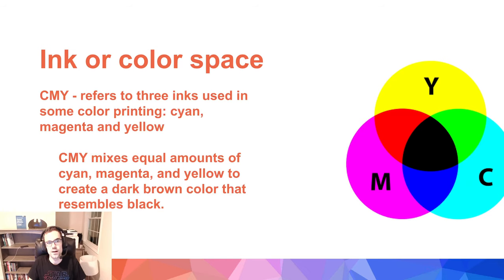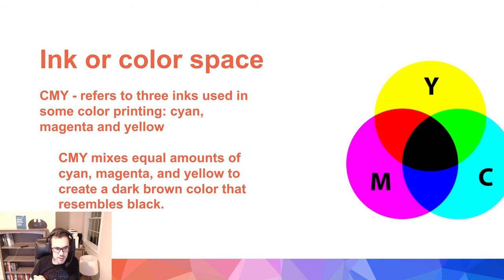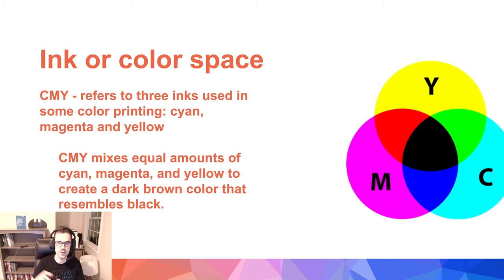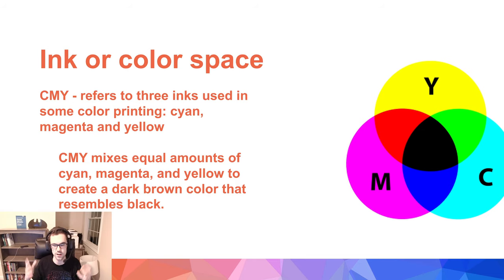Moving on, we have ink or color spaces for printers. The first is CMY, which refers to three inks used in some color printing: cyan, magenta, and yellow. CMY printers mix equal amounts of cyan, magenta, and yellow to create a dark brown that resembles black. As they overlap the colors, they can create this darker blackish-brown, and that's how they get the fourth color. You need three major colors to create all the colors in this case, and here they're making a brown by essentially layering all the ink on top of itself.